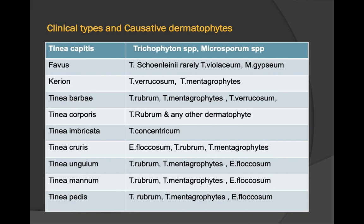Other clinical types include favus, caused by T. schoenleinii and rarely T. violaceum and M. gypseum. Tinea capitis is caused by Trichophyton and Microsporum species. Kerion is caused by T. verrucosum and T. mentagrophytes. Tinea barbae by T. rubrum, T. mentagrophytes, and T. verrucosum. Tinea cruris by E. floccosum, T. rubrum, and T. mentagrophytes. Tinea pedis by T. rubrum, T. mentagrophytes, and E. floccosum.